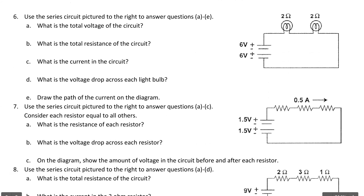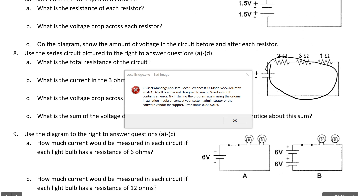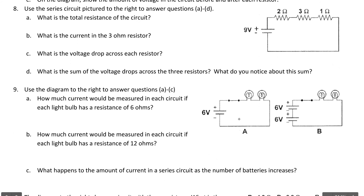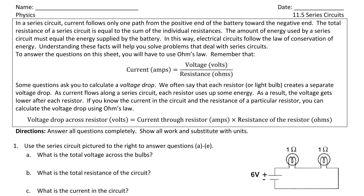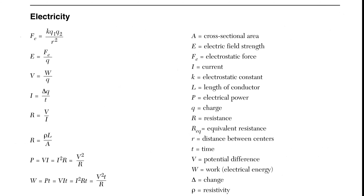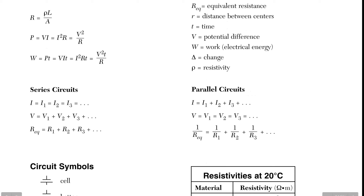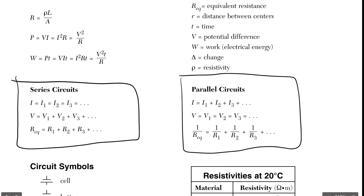These circuits are all arranged in series, as you can tell because it's one continuous loop—there's not multiple loops. Let's look at what the relationships for Series Circuits look like in our reference table. These are all the different tools in our tool chest. This is very important: here are the relationships for Series Circuits and for Parallel Circuits.